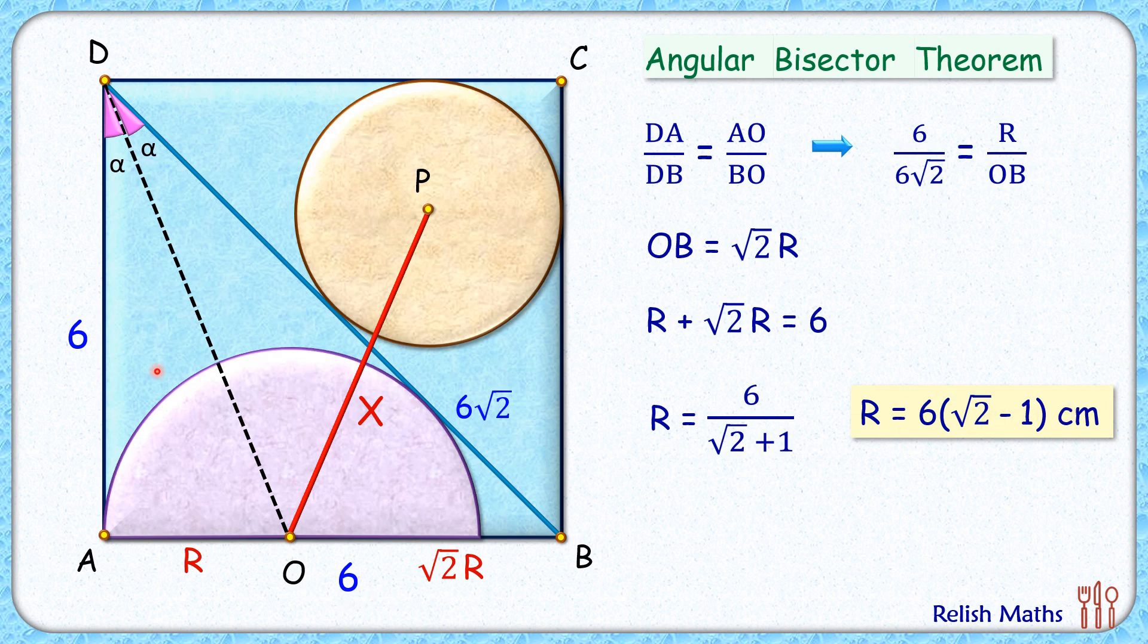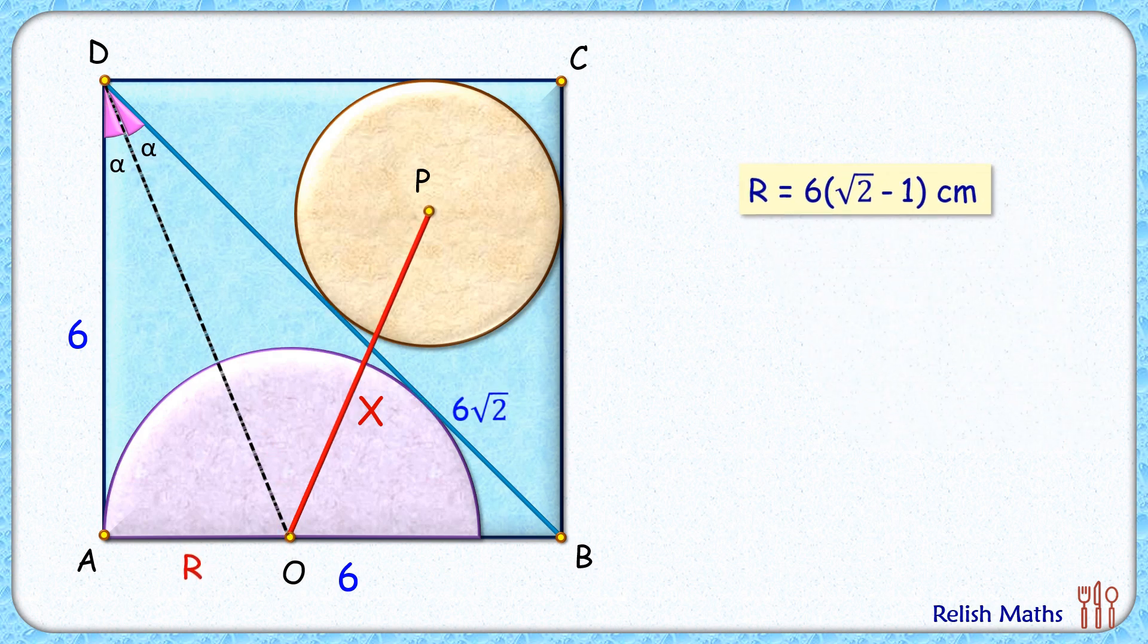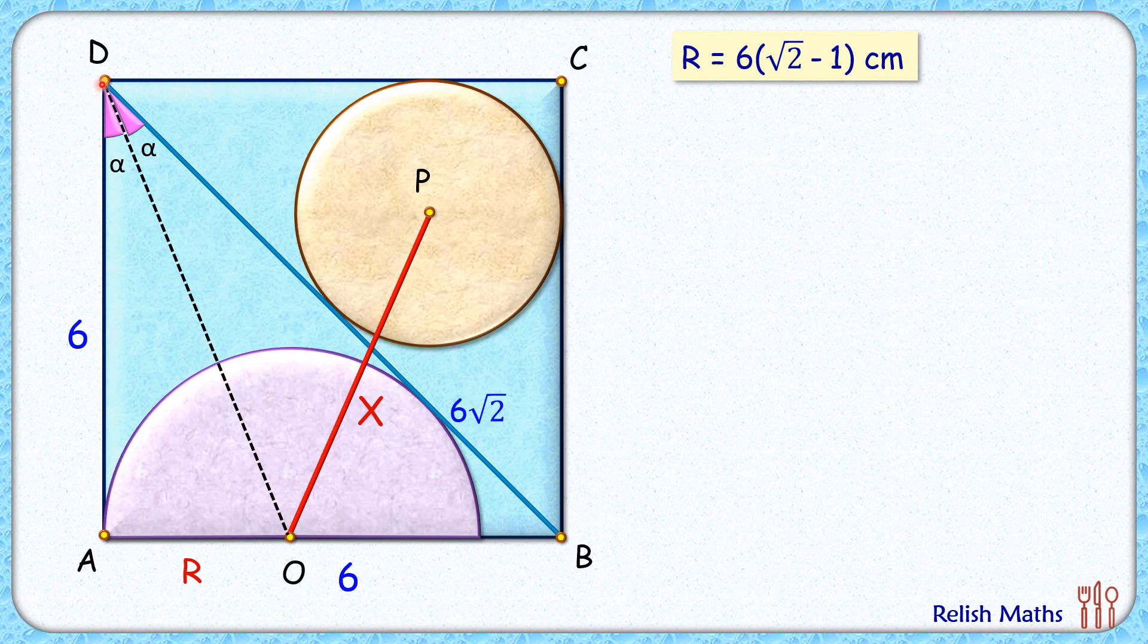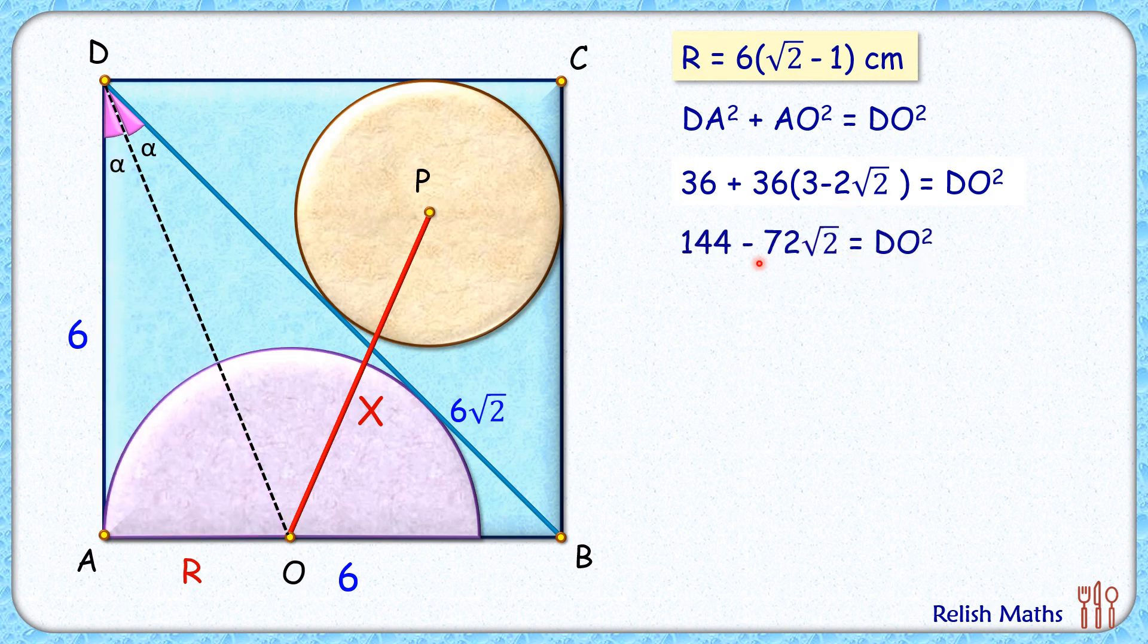Now let's find the length of DO. To get the length of DO, let's consider the triangle DAO. It's a right angle triangle, so let's apply Pythagoras theorem. Putting the values here where DA = 6 and AO is the radius of semicircle which is 6(√2 - 1), squaring and opening the bracket on the left side we'll get the equation. Simplifying, we'll get the value of DO² as 144 - 72√2.